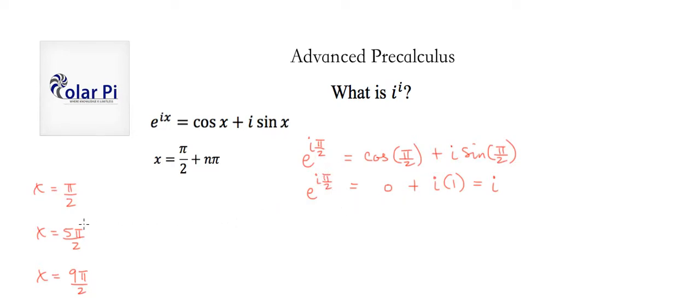And in fact, it'd be true if we plugged in 5π over 2 or 9π over 2. e to the i times 5π over 2 is also i, and e to the 9π over 2 times i is also i, and so on. In fact, there are infinitely many radian values that return i when we plug them into here. But this one is good enough.